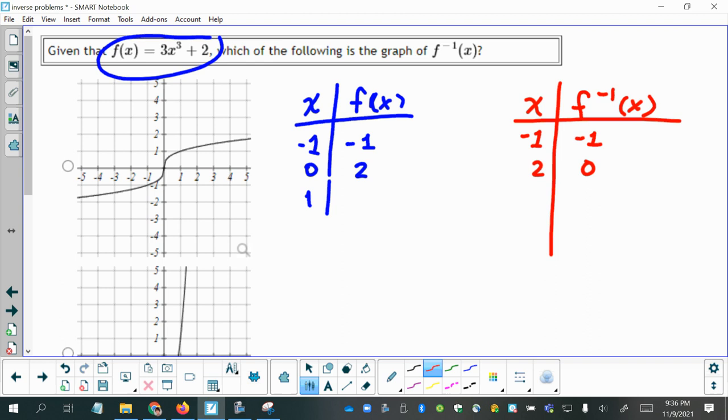And I'll do one more. So plugging in 1 to my original function, I'll have 3 times 1 cubed plus 2. That'll give me 3 plus 2, which is 5. So I've got the point 1 comma 5. And if I switch the x and y, then I have 5 comma 1.